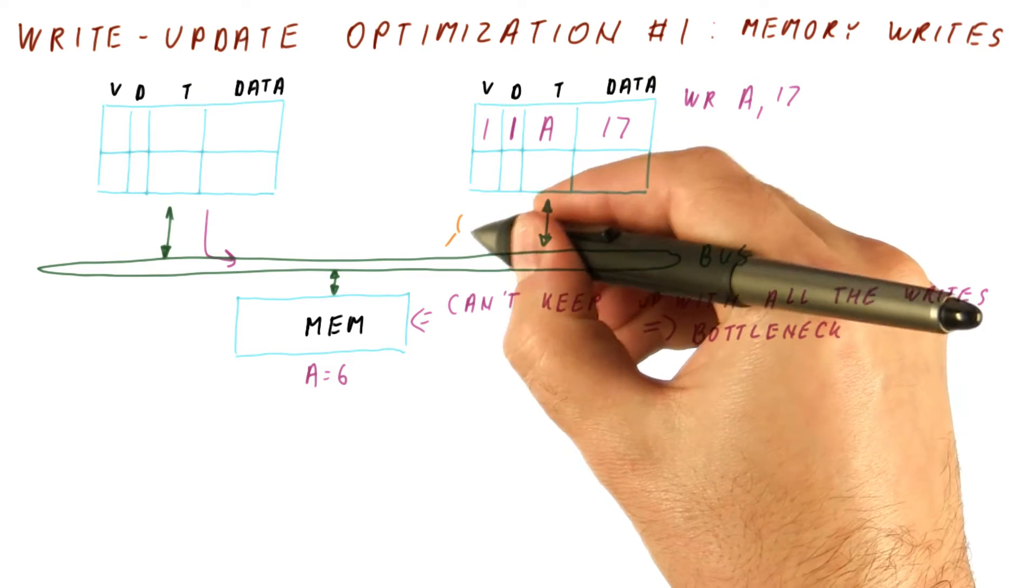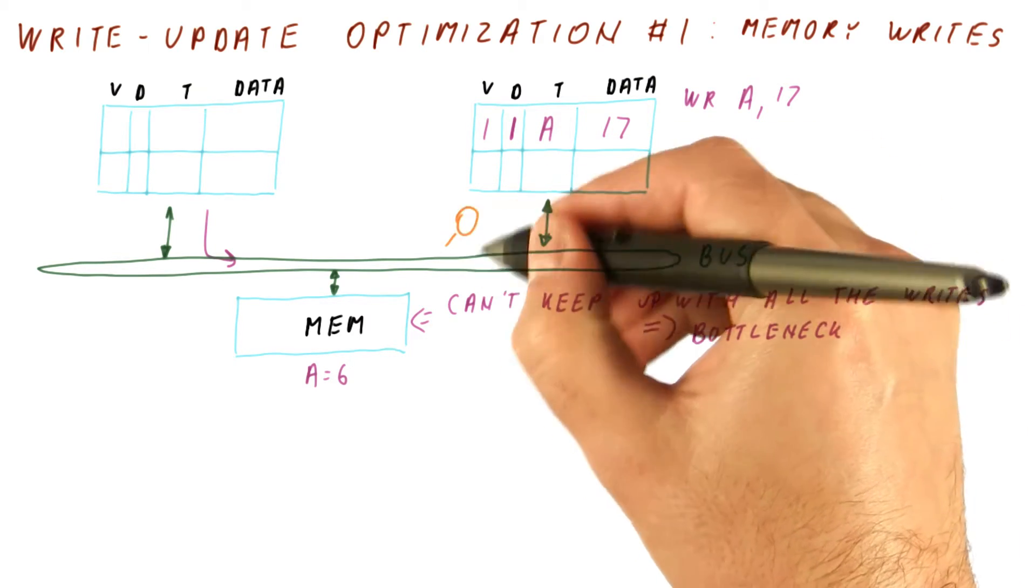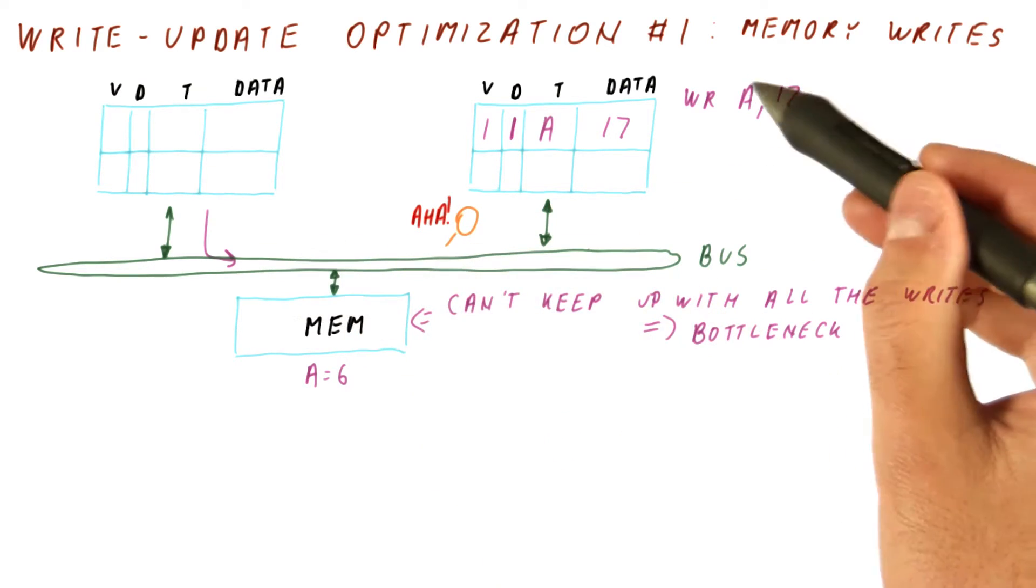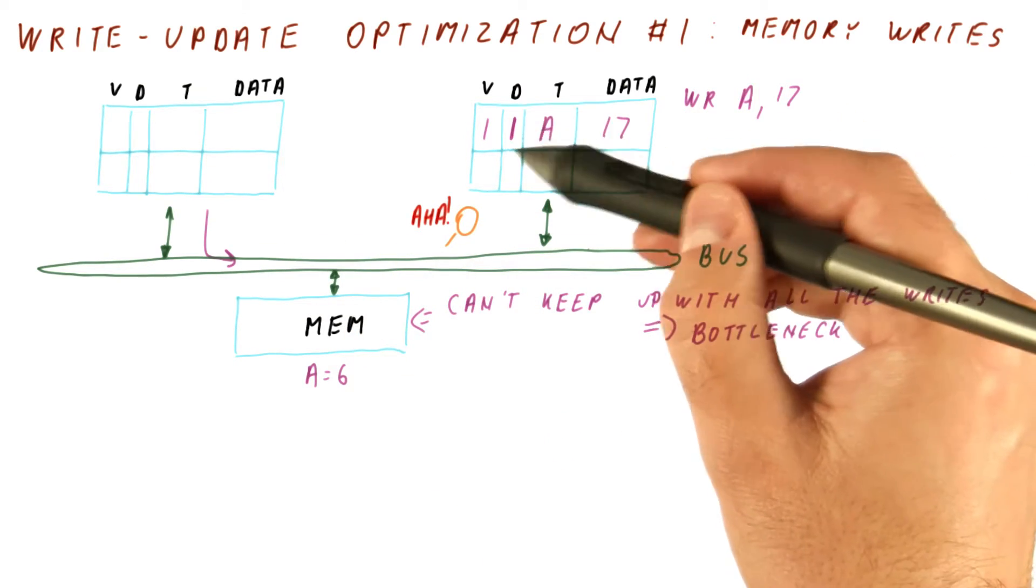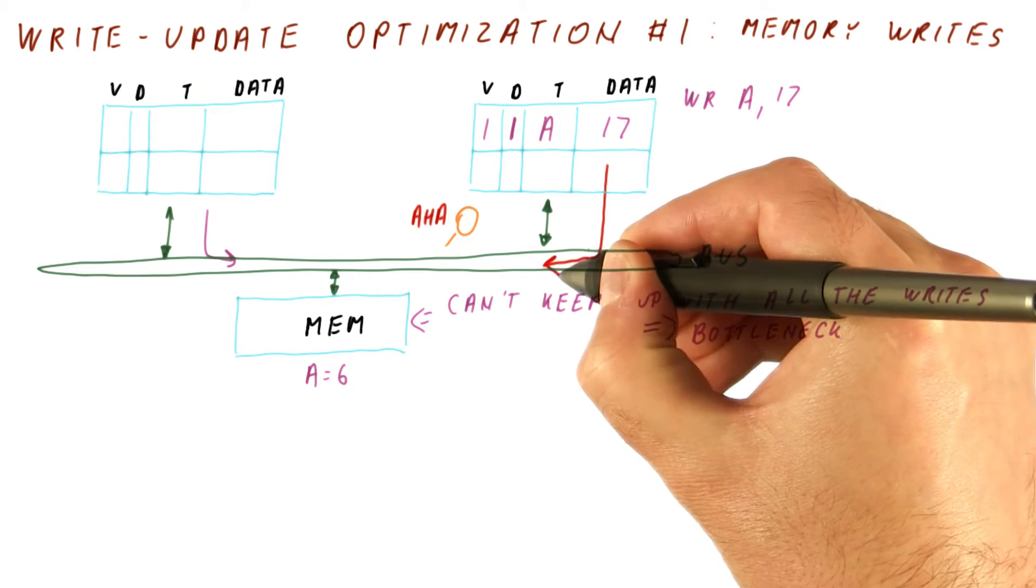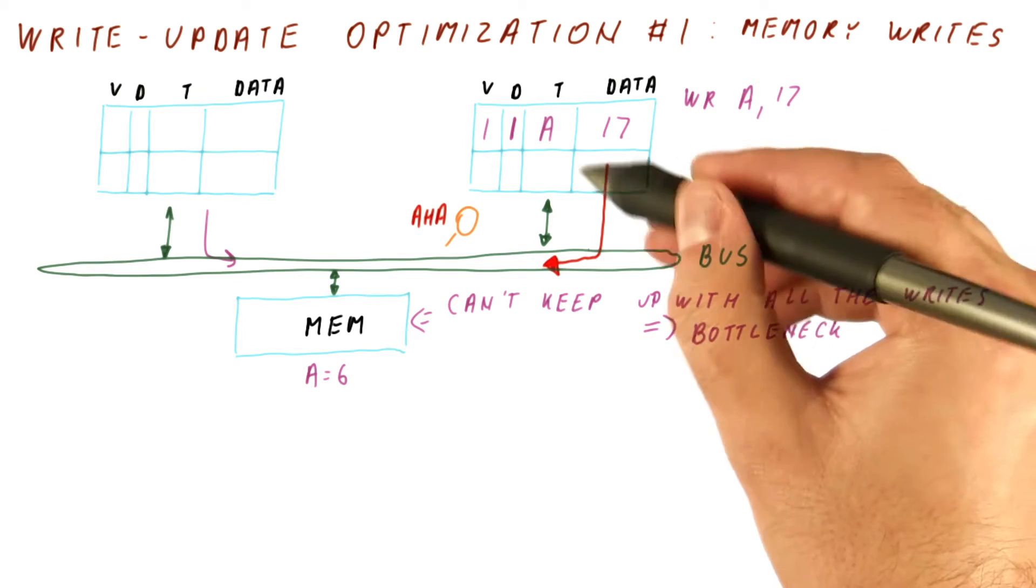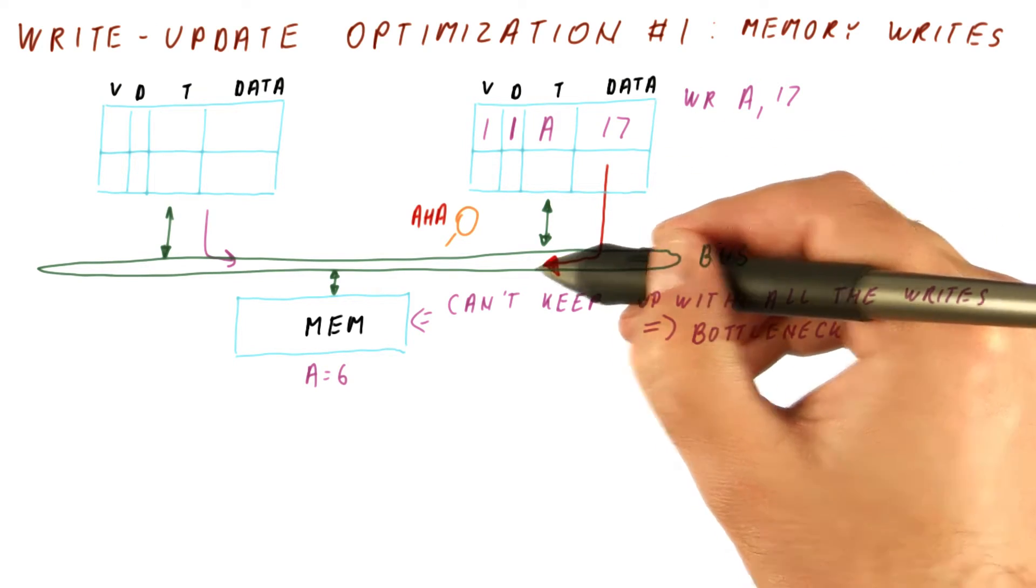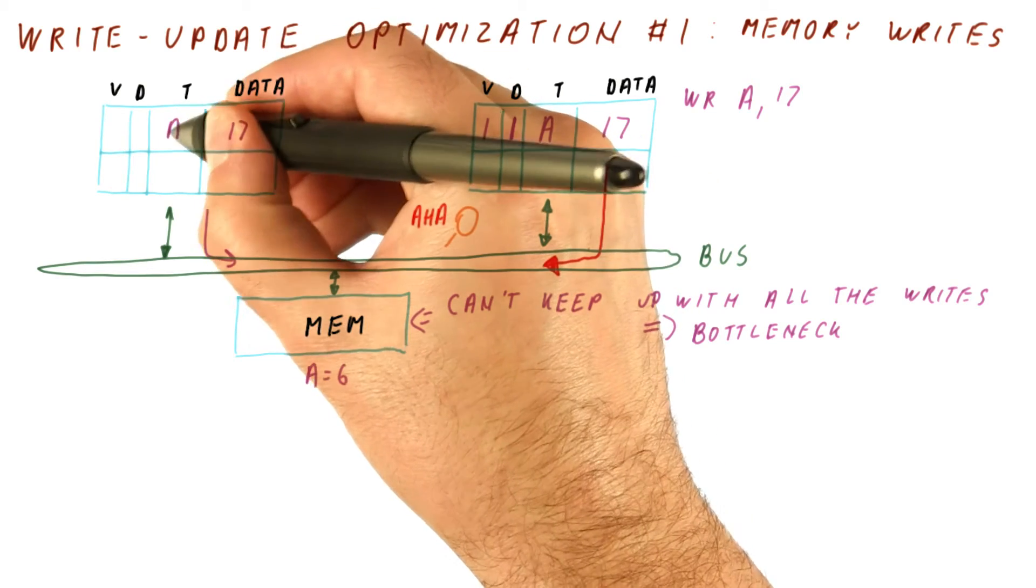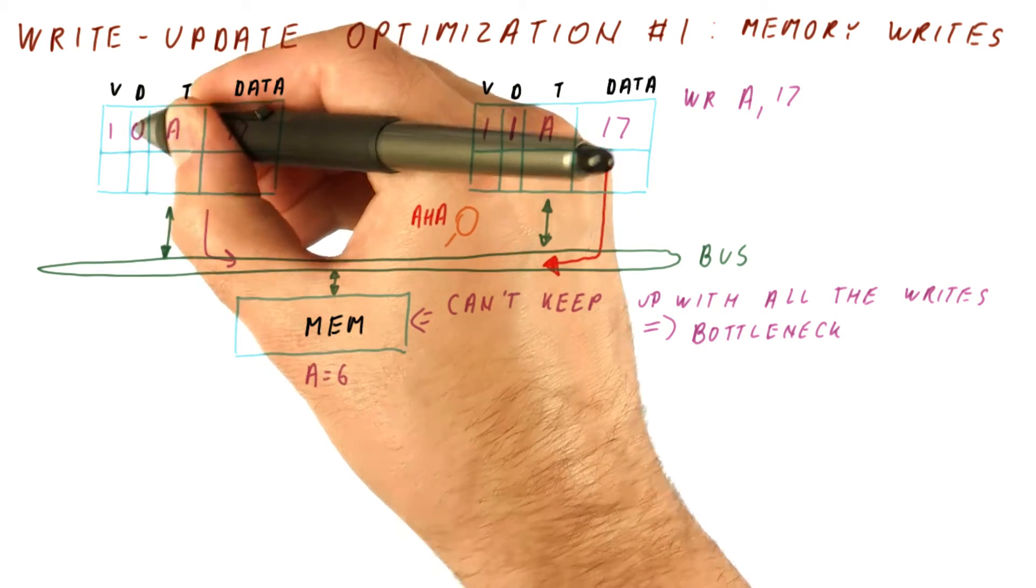So now this cache needs to snoop reads as well. Notice that we are reading the same block that it has in a dirty state. So instead of the memory being allowed to respond, we respond first. The cache is faster than the memory, so it will respond quicker and say that A is 17. So now here we get A becomes 17 in this cache and it's not dirty.